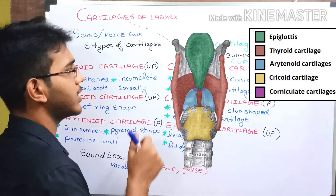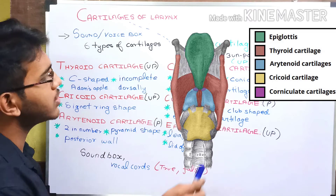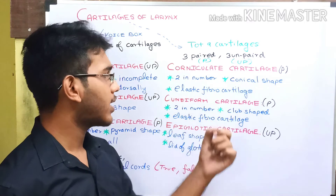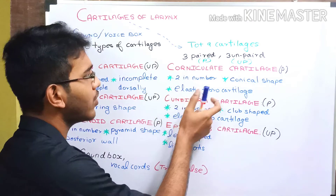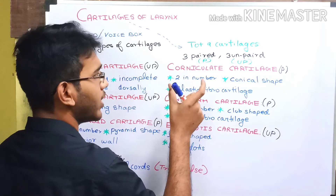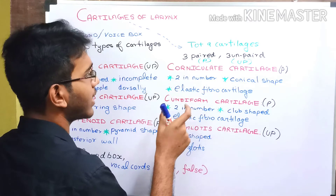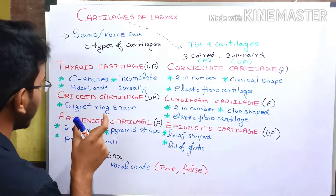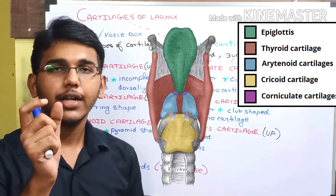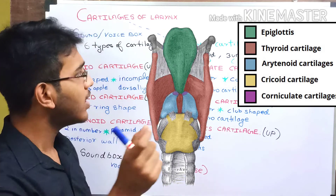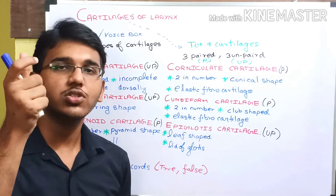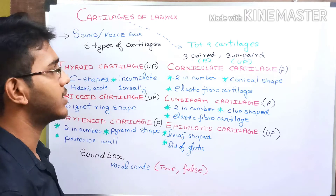Next, we have the corniculate cartilage. It is also a paired cartilage and is conical in shape. It is an elastic fibrocartilage. The corniculate cartilage is present at the apexes of the arytenoid cartilage — that is, at the tip or apex of the arytenoid cartilage.